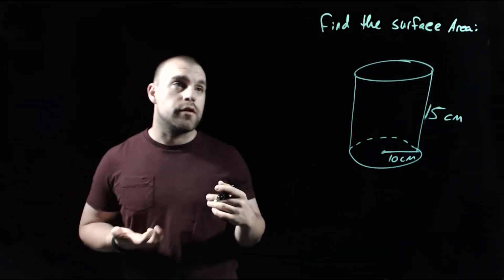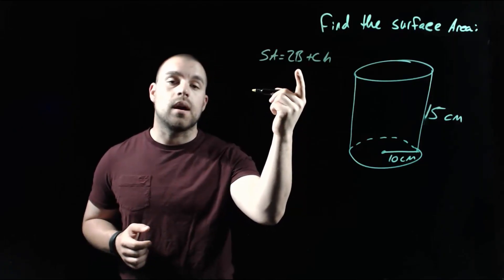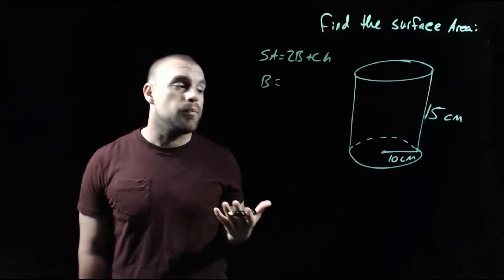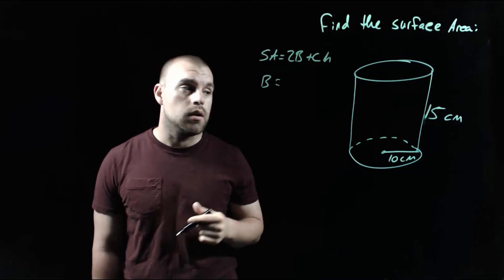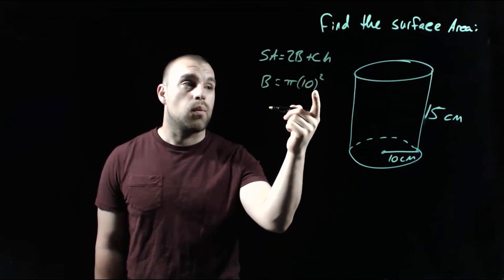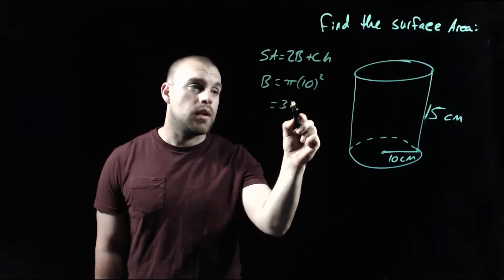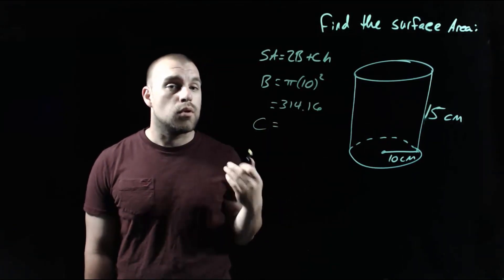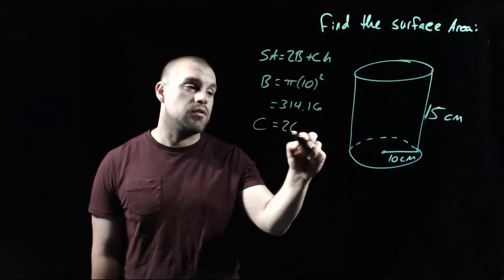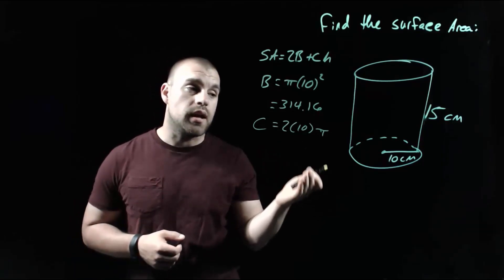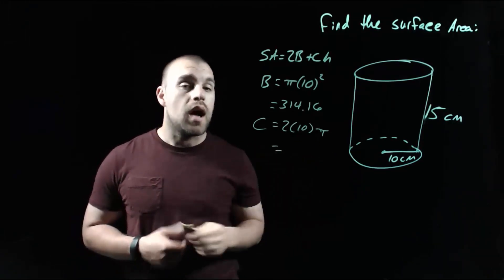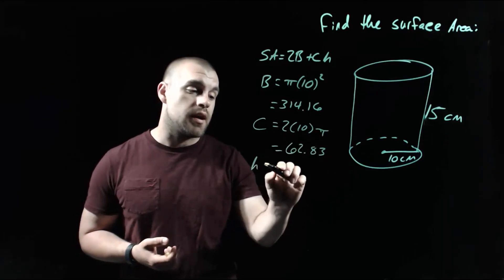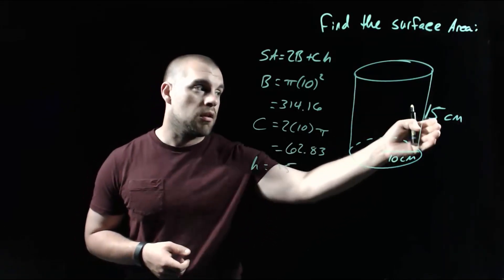Taking a look at the cylinder, the surface area formula says we take 2 times the area of the base, plus the circumference times the height. First, let's find the area of the base. Since we're dealing with a circle, we do pi r squared. Taking 10 squared, that's 100, and 100 times pi gives us 314.16. For the circumference, we take 2 times the radius times pi — so 2 times 10 times pi. Two times 10 is 20, and 20 times pi gives us 62.83. The last value we need is the height of our cylinder, which is the 15-centimeter length going up and down on the outside.